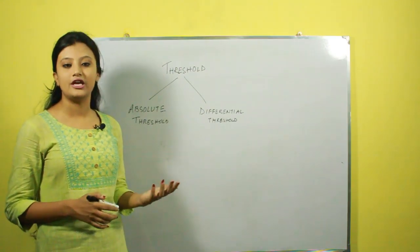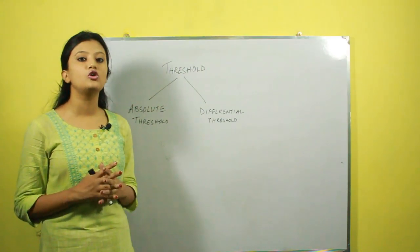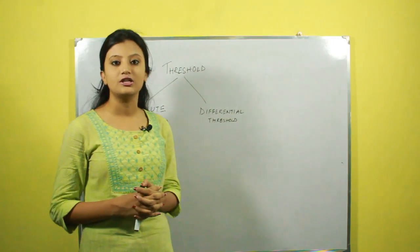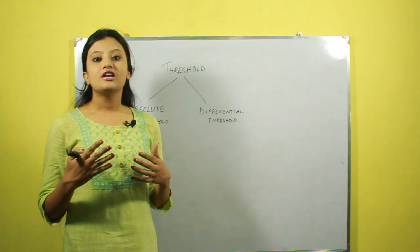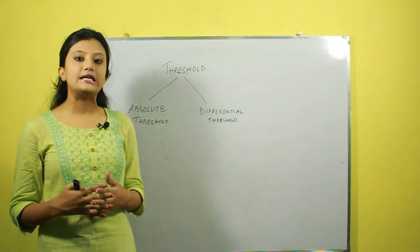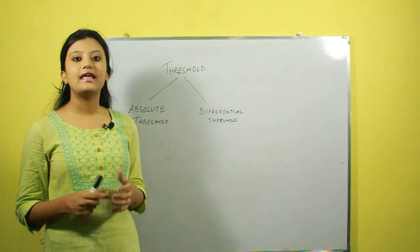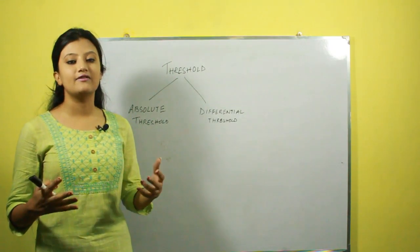The other one is differential threshold. It is the change of intensity over an already applied stimulus that the human being is able to differentiate.